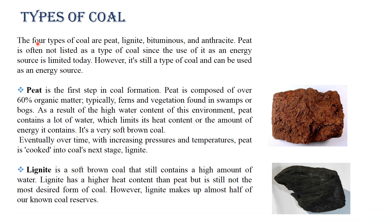Types of coal. The four types of coal are peat, lignite, bituminous, and anthracite. Peat is not often listed as a type of coal since its use as an energy source is limited today; however, it is still a type of coal and can be used as an energy source. Peat is the first type in the coal formation, composed of over 60% organic matter — typically ferns and vegetation found in swamps or bogs. Due to the high water content of this environment, peat contains a lot of water which limits its heat content. It is a very soft brown coal.